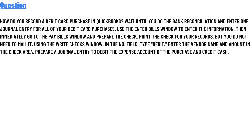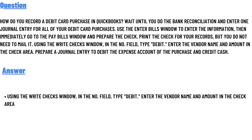The correct answer is: using the Write Checks window, in the number field type 'DEBIT,' then enter the vendor's name and amount in the check area. You can also prepare a general entry to debit the expense accounts for the purchase and credit cash.